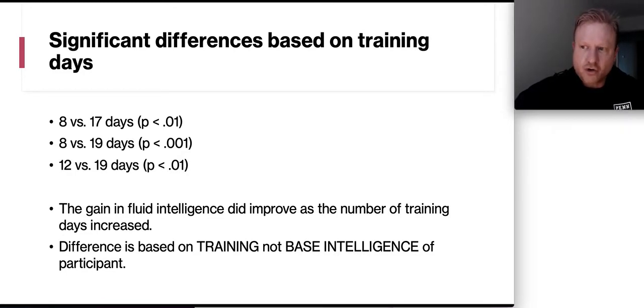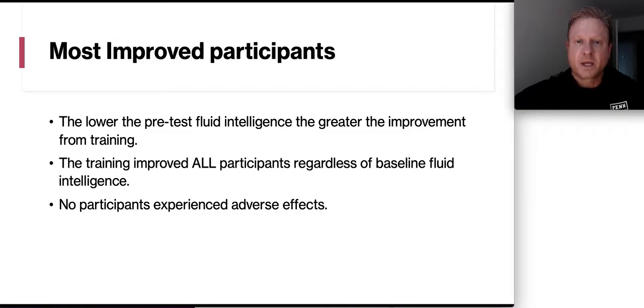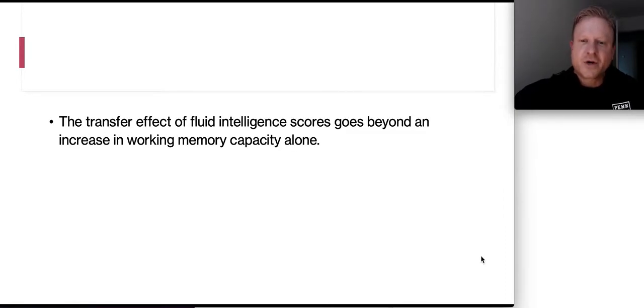Now the difference is based on training, not base intelligence of the participants. So they did actually control for how smart those people were coming in. Now the most improved participants were the ones that had the lower pre-test fluid intelligence score. So the less intelligent people actually got more of a benefit by doing this training. However, the training did improve for all participants regardless of what their baseline fluid intelligence was. No participants experienced any adverse effects. So no one went backwards on this one. Now the transfer effect of fluid intelligence scores does go beyond an increase in working memory capacity alone.